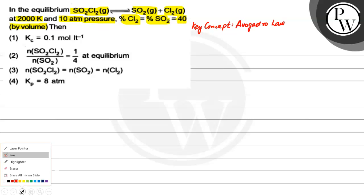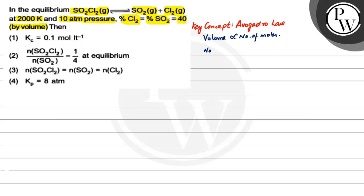So what does Avogadro's law say? Avogadro's law says volume is directly proportional to number of moles. Also, we know that number of moles is directly proportional to pressure if volume and temperature are constant, from ideal gas law. Okay, so let's use these two things and solve the question.